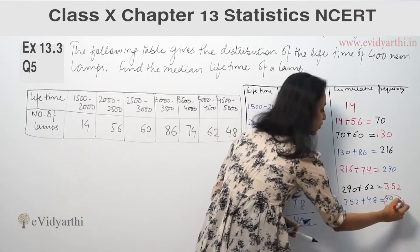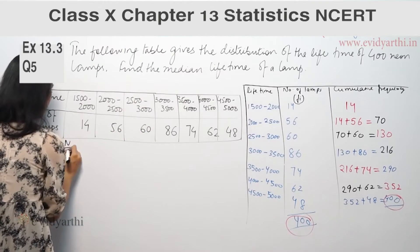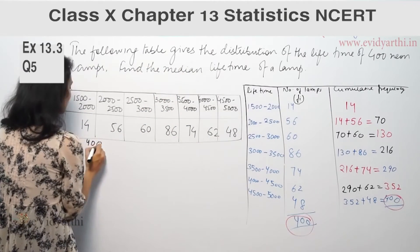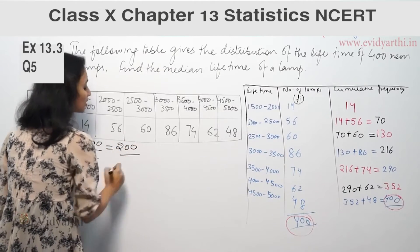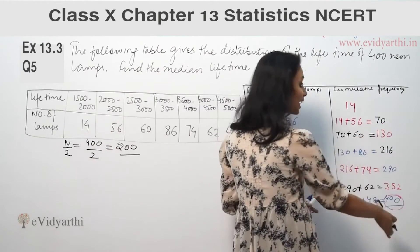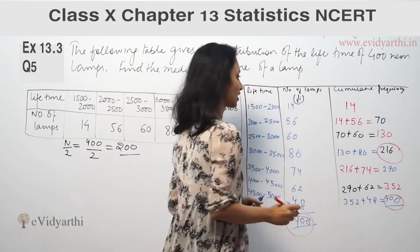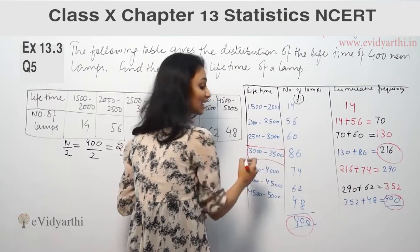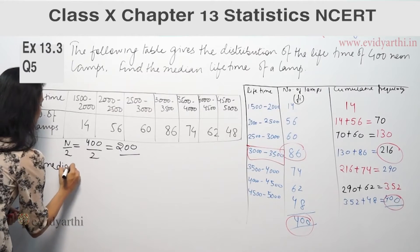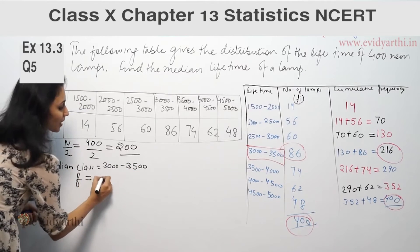Now to find the median, we calculate n by 2. Here n is the total frequency, which is 400. So n by 2 equals 400 divided by 2, which is 200. We look for the just-greater value than 200 in the cumulative frequency column. That value is 216, and the corresponding class is 3000 to 3500. So our median class is 3000 to 3500, with frequency 86.